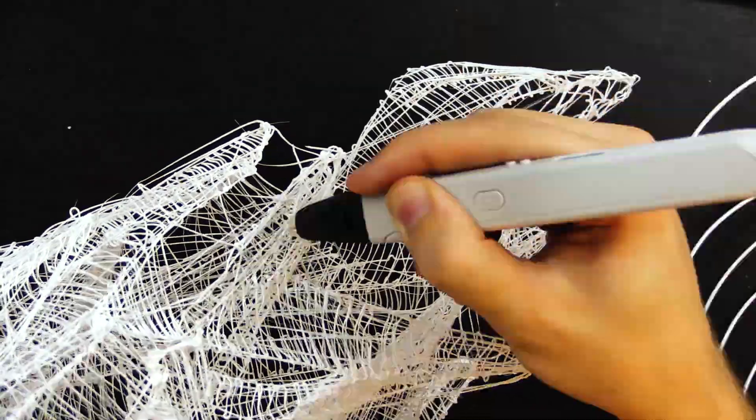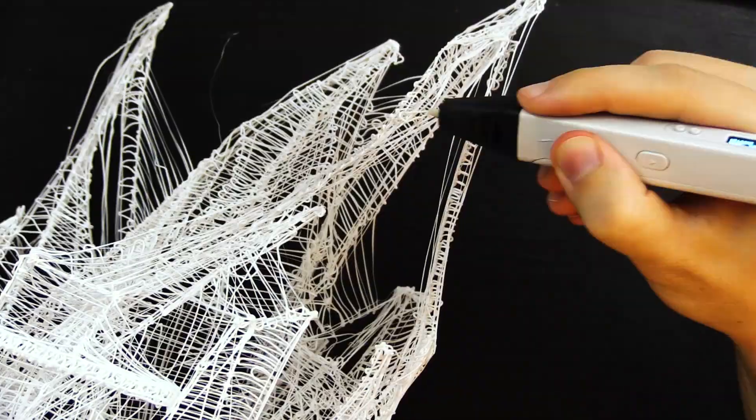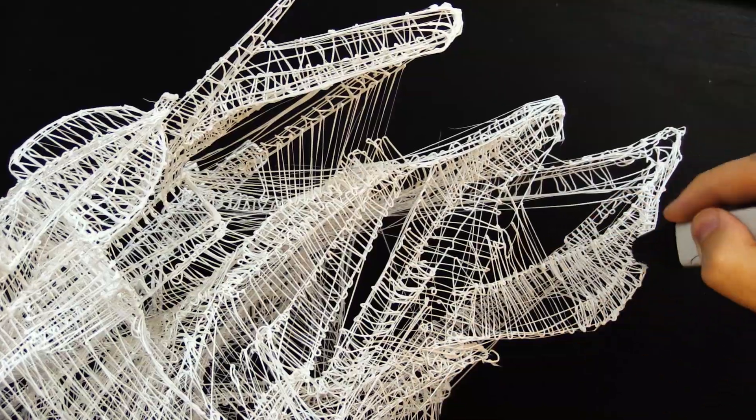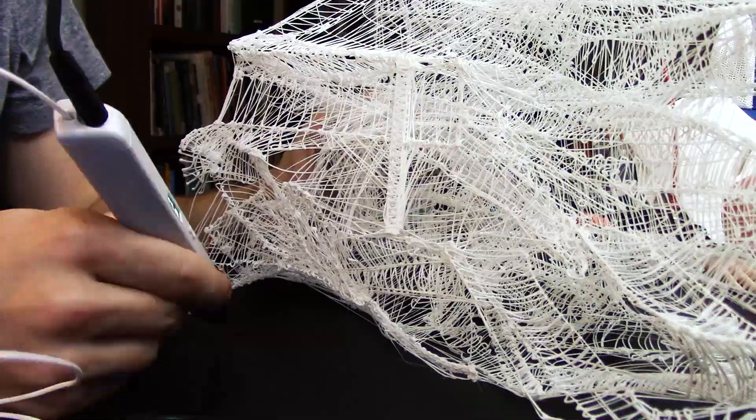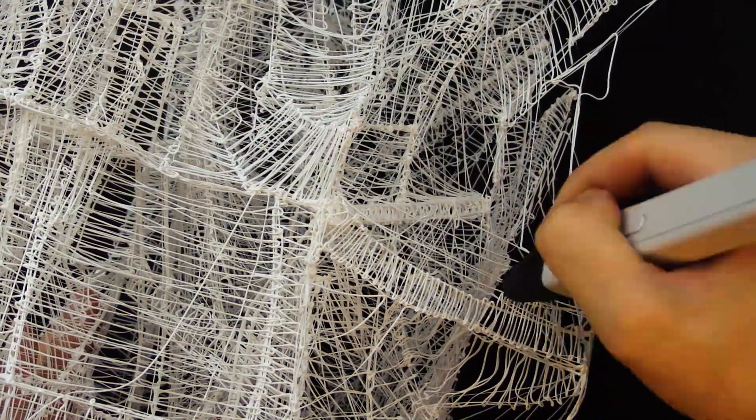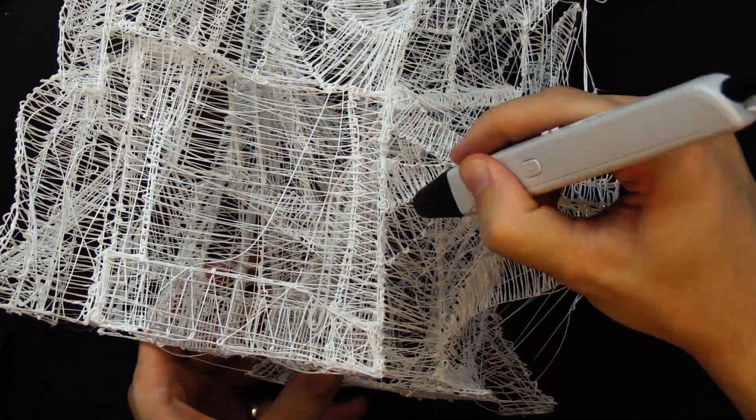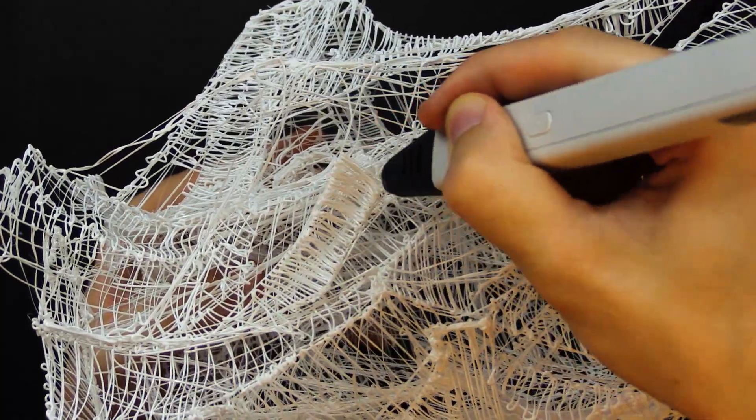These spools are actually meant to be attached to the sides of 3D printers on like a little peg, a little spoke, and then it feeds into the 3D printer automatically. Anyways, I would just cut off little sections of it, and it feeds into the back of the 3D pen automatically.